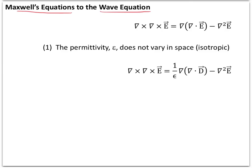There's a mathematical identity in vector calculus: the curl of the curl of a vector equals the gradient of the divergence of that vector minus the Laplacian (del squared) of that vector. If we make the assumption that the permittivity epsilon — the way we characterize electrical properties of materials — does not vary in space, in other words it's isotropic, then we can rewrite the curl of the curl of the electric field in this form. We had to make this assumption because we replaced E with D (or epsilon times E) and pulled epsilon outside of the spatial derivative.